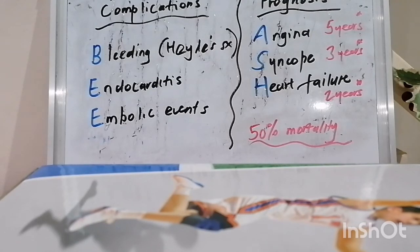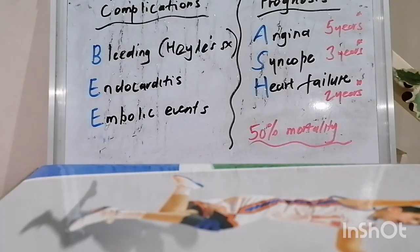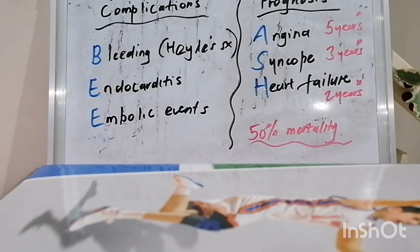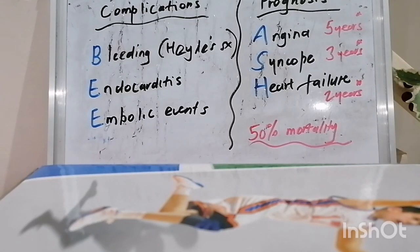So there you have it: aortic stenosis complications include bleeding in the way of Heyde's syndrome, endocarditis, and embolic events. Prognostication for 50% mortality: five years if the patient has angina, three years if the patient has syncope, and two years if the patient has concomitant heart failure. God bless you! Have a wonderful day. Guard your heart with all diligence. I'll see you tomorrow with another mnemonic.